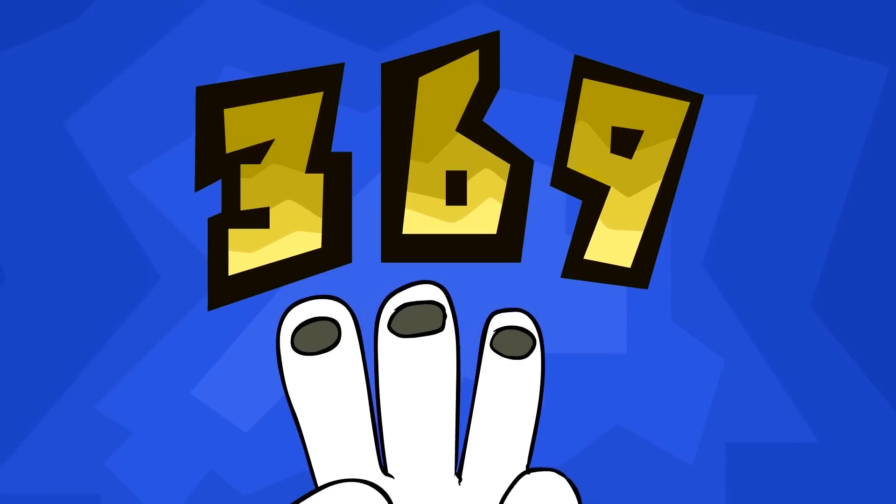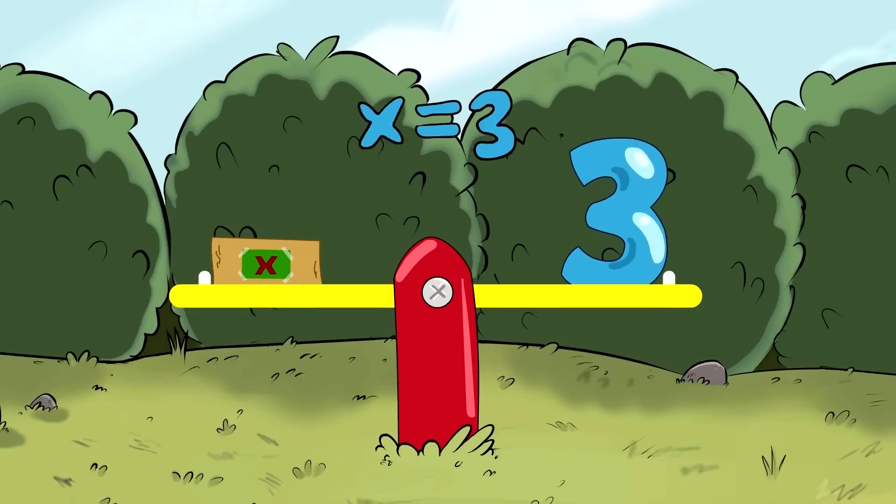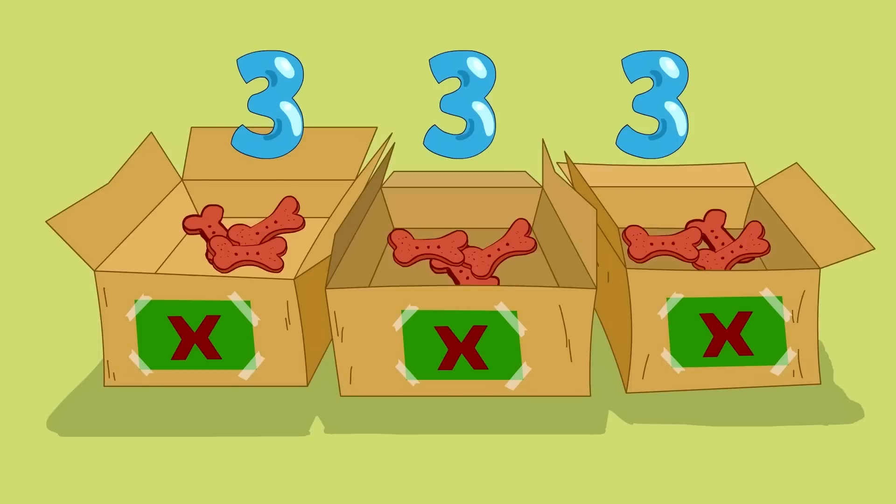I end up with three fingers showing since three goes into nine three times. So, the nine on the right becomes a three. X equals three is the answer. There are three treats in each box.